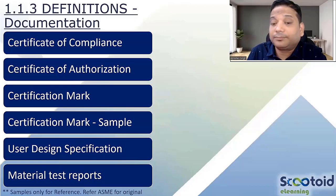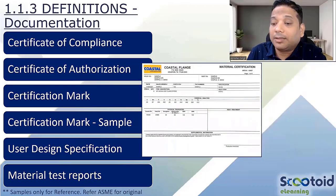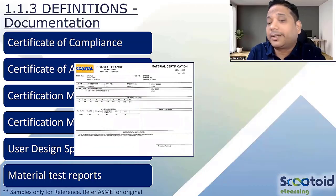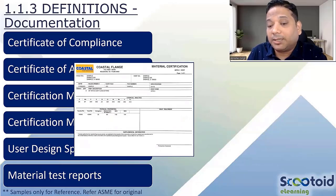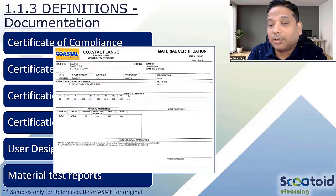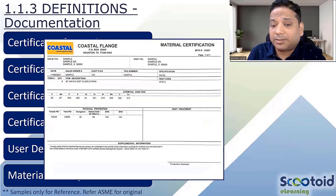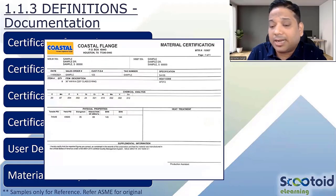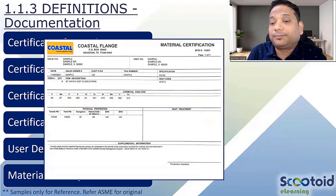Material Test Report — every material has to have a material test report, which mentions the chemical analysis, physical properties, and heat treatment done on that material. Everything should be there.